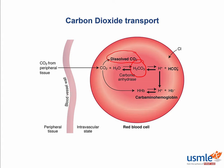Let's talk about some key physiologic concepts involving CO2 and oxygen transport. The Haldane effect describes the phenomenon in which CO2 is released from red blood cells. In the lungs, oxygenation of hemoglobin causes dissociation of H+ ions, which can then combine with bicarbonate to form carbonic acid, which then splits into CO2 and H2O with carbonic anhydrase.